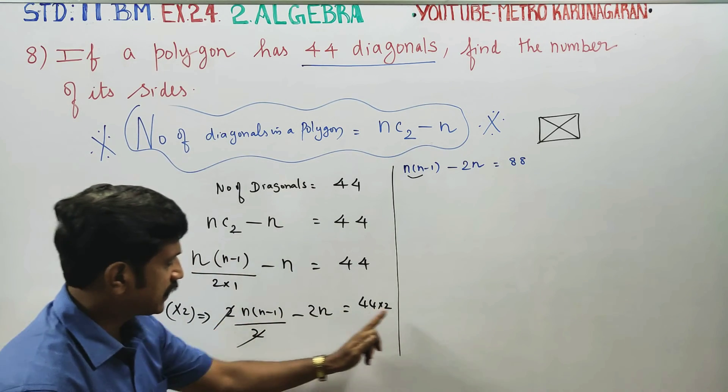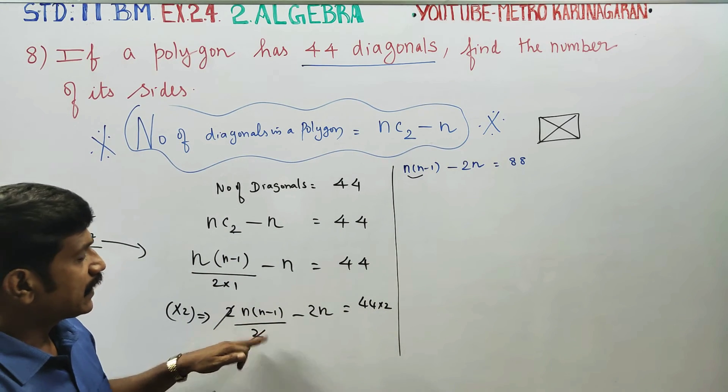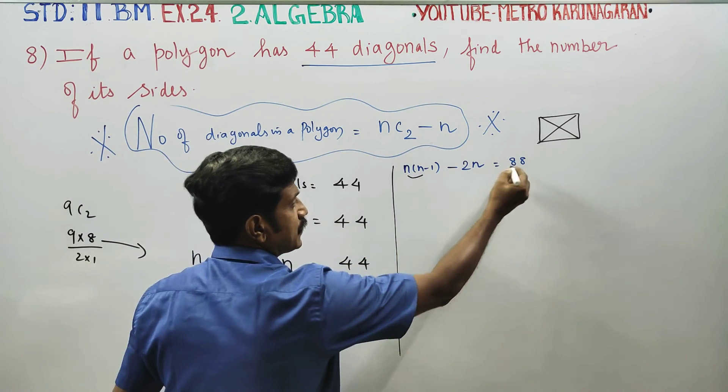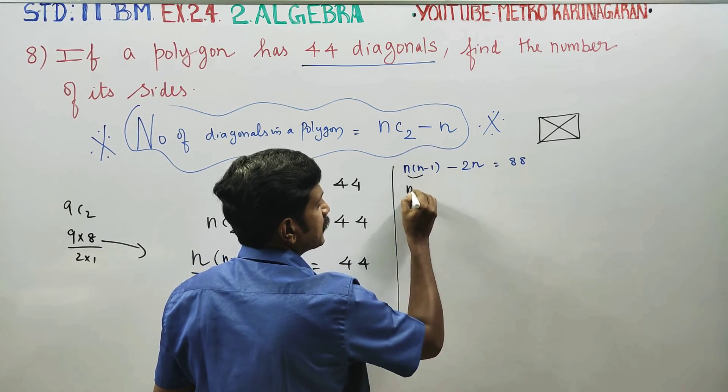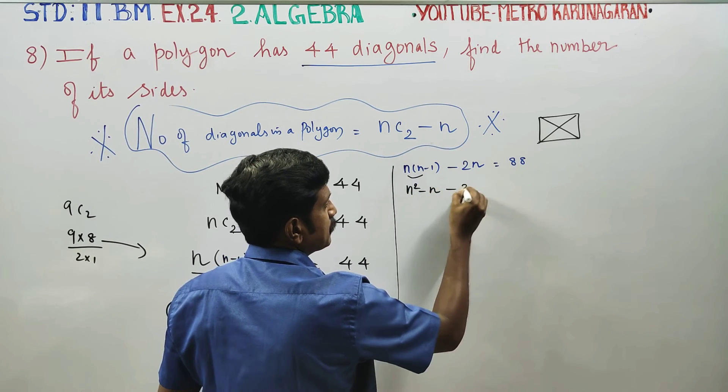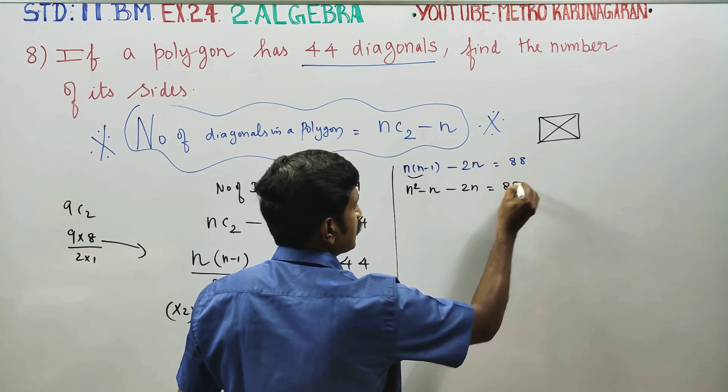After that, multiply the denominator. Then n(n-1) minus 2n equals 88. n² - n - 2n is equal to 88.